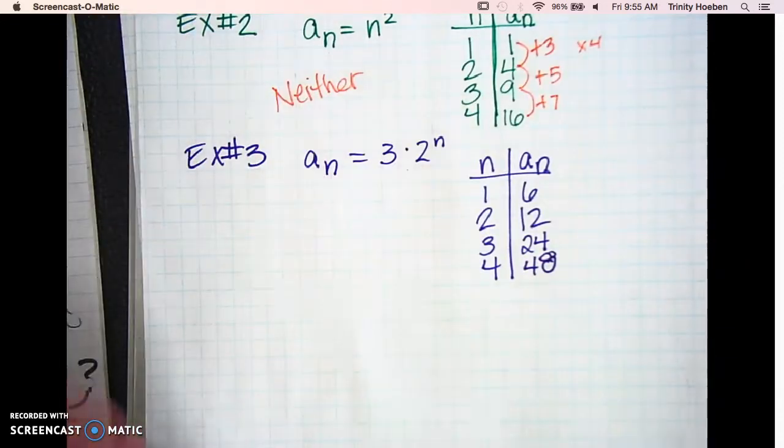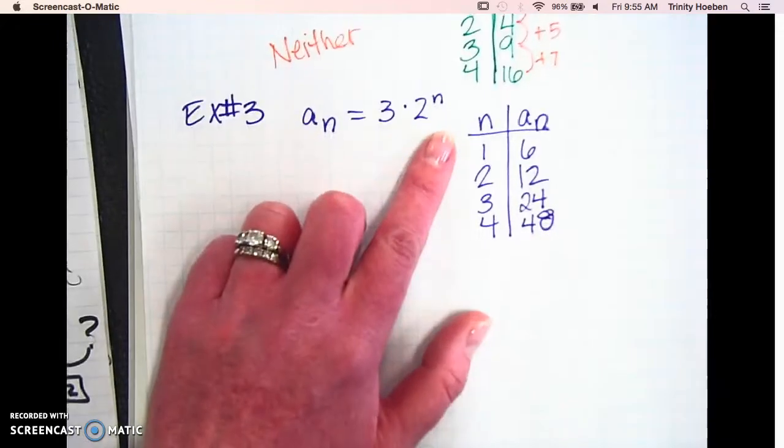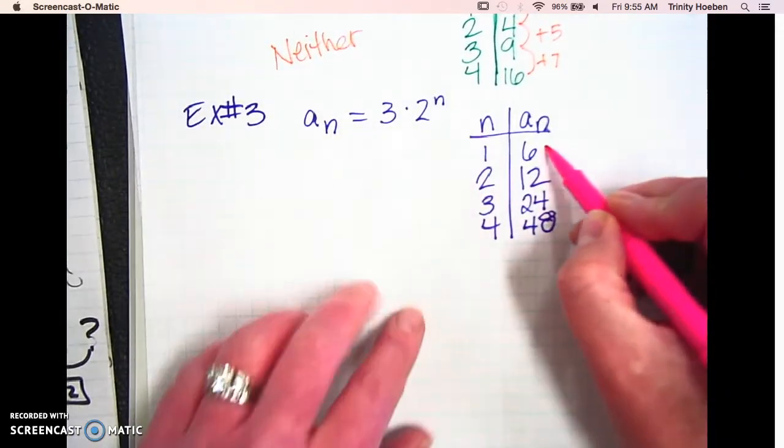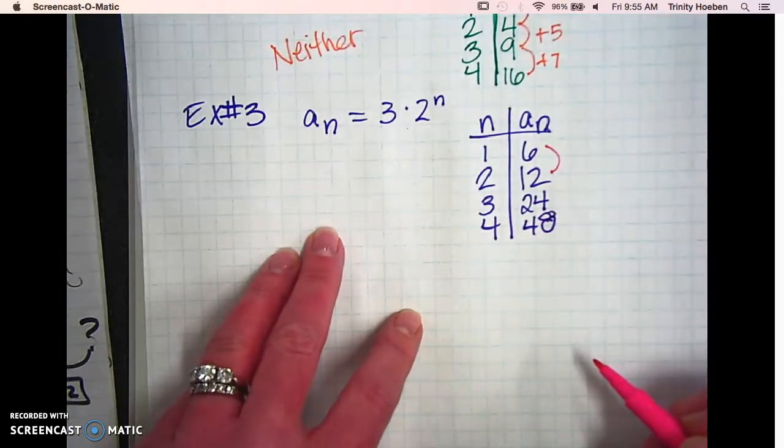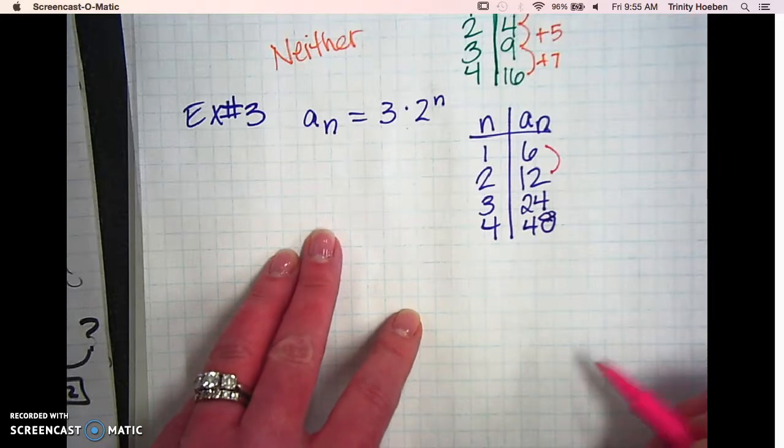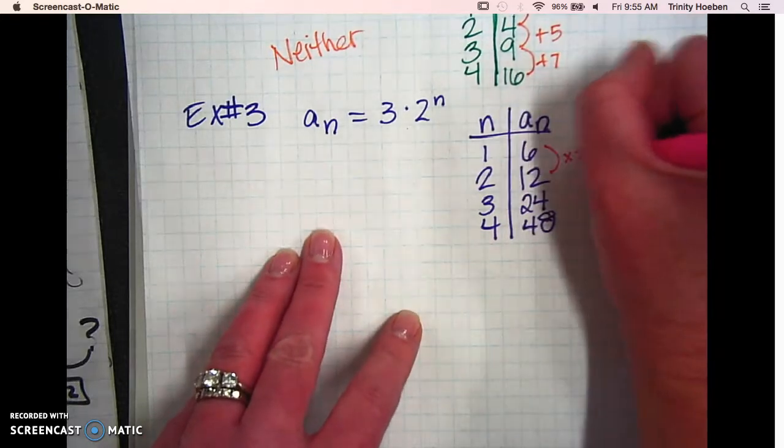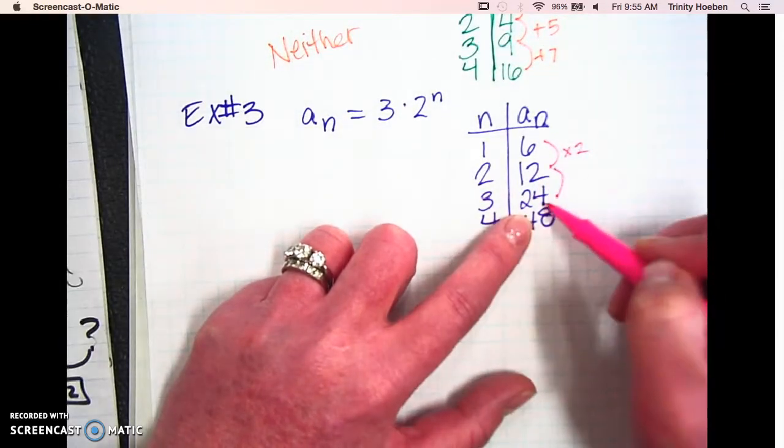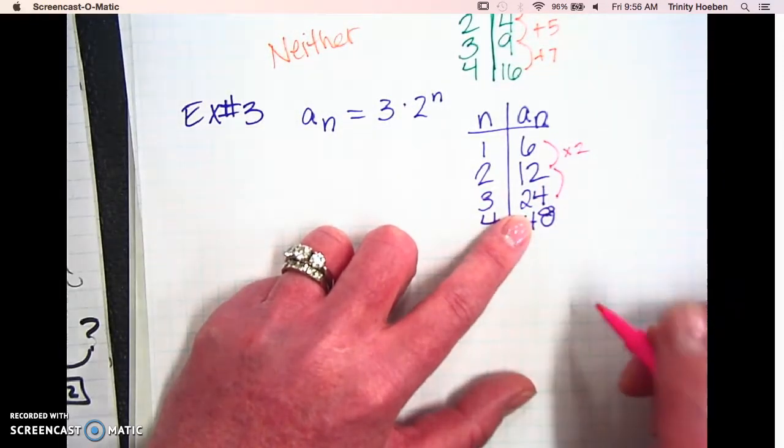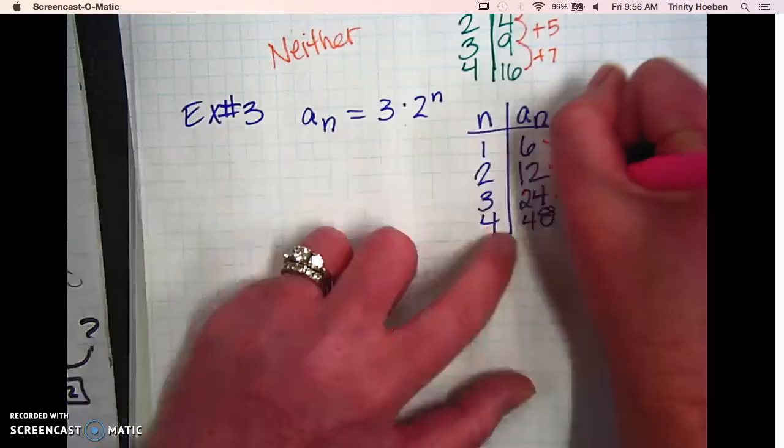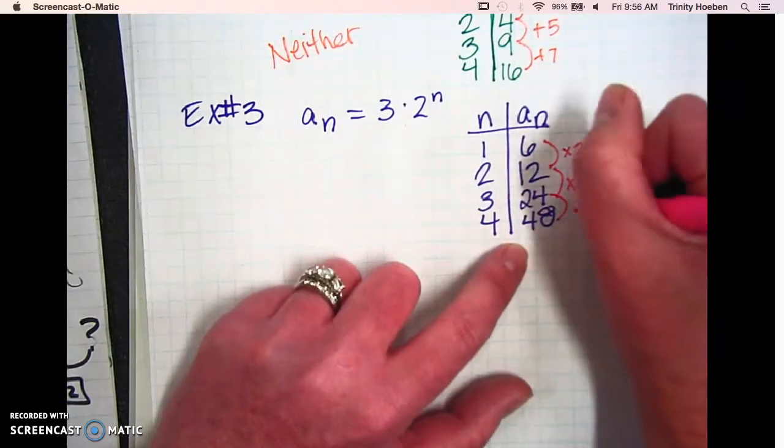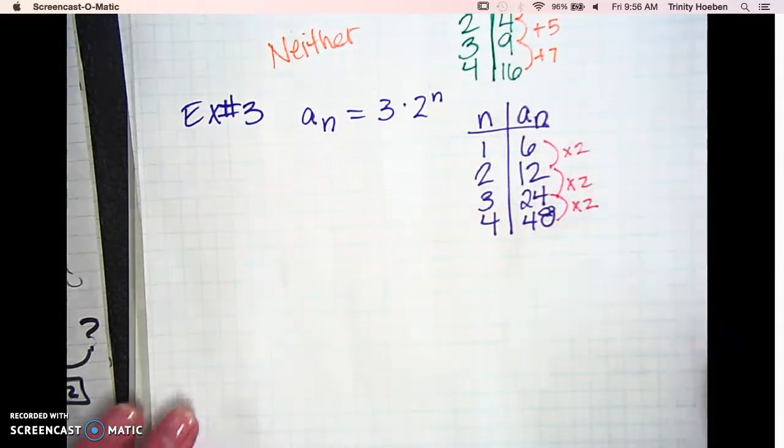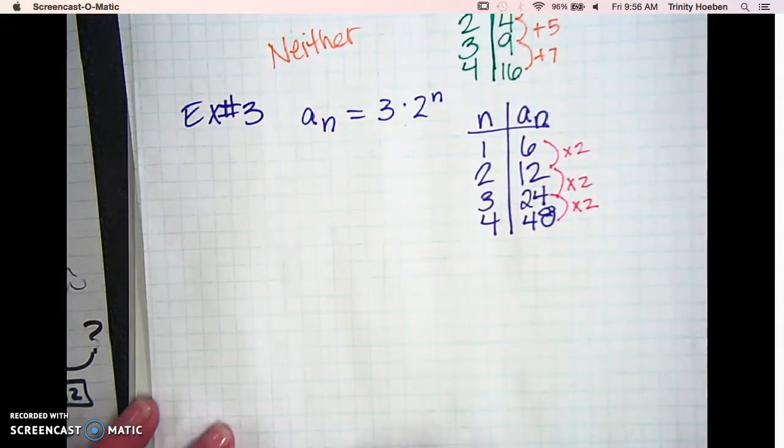Okay, now let's see if we can find a pattern here. Okay, so from 6 to 12, anybody see a pattern? Times 2. I mean, you could try plus 6, but from here to here, it's clearly not plus 6, right? 12 to 24? Bless you. 12 to 24, also times 2. 24 to 48, also times 2. So this one is what? Geometric.